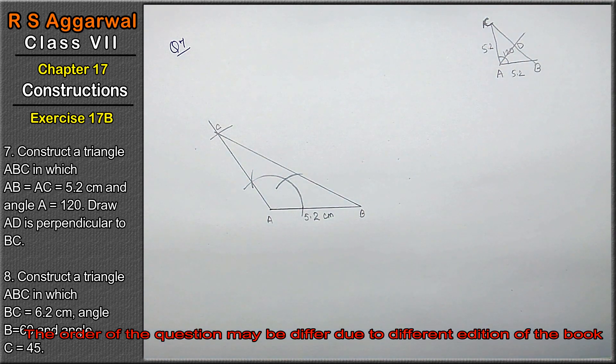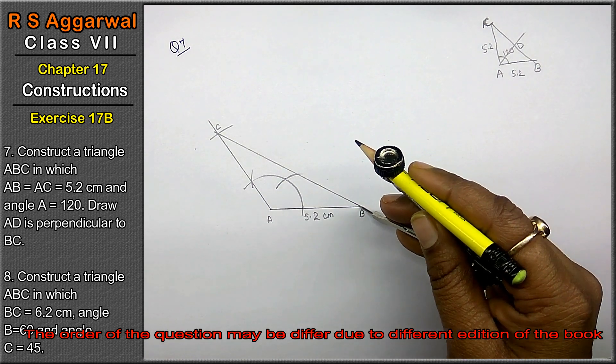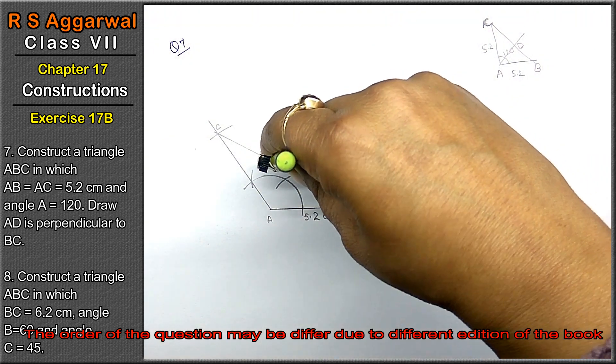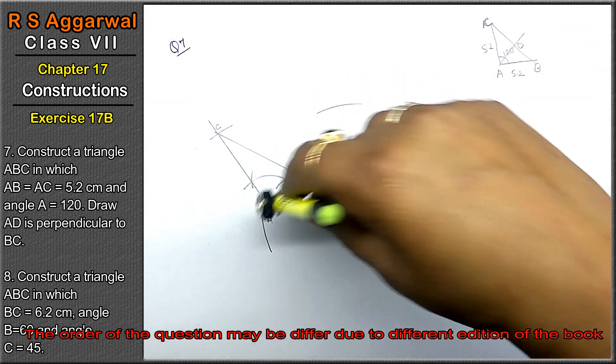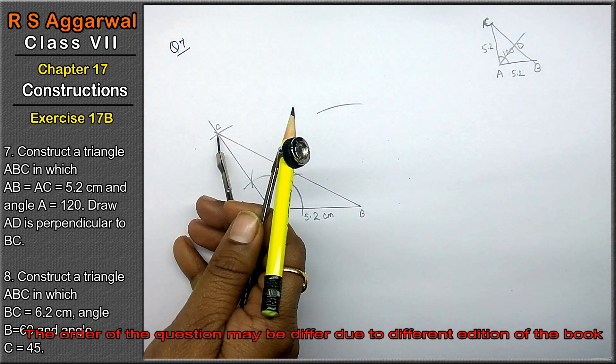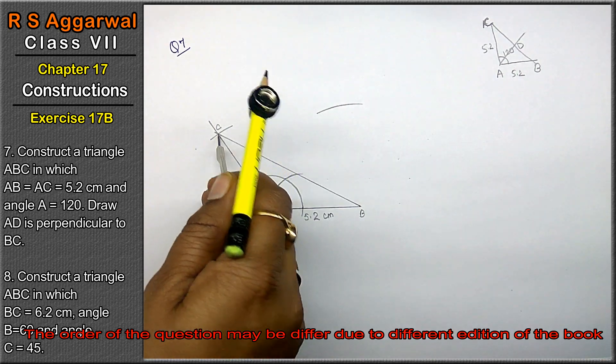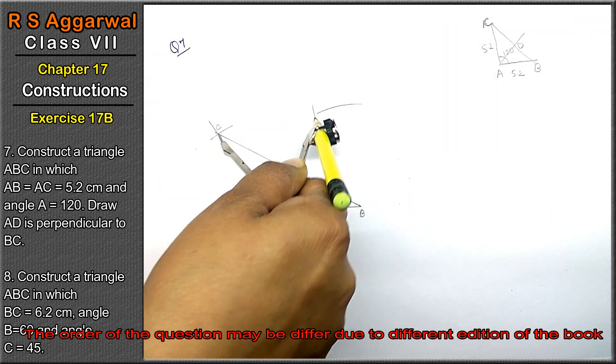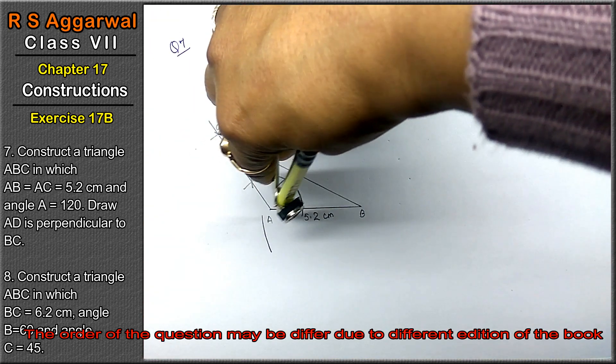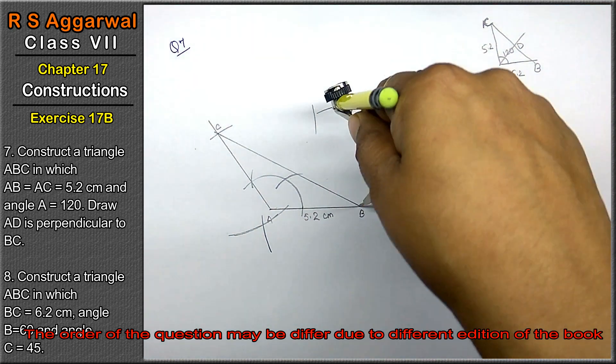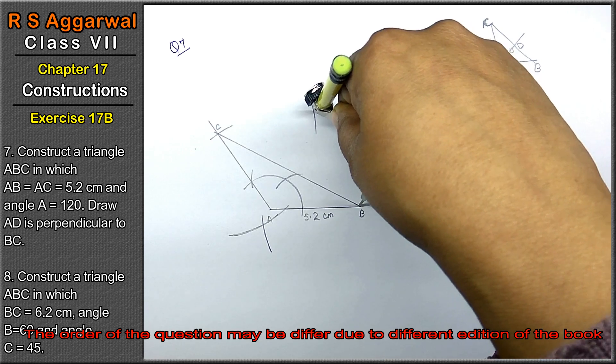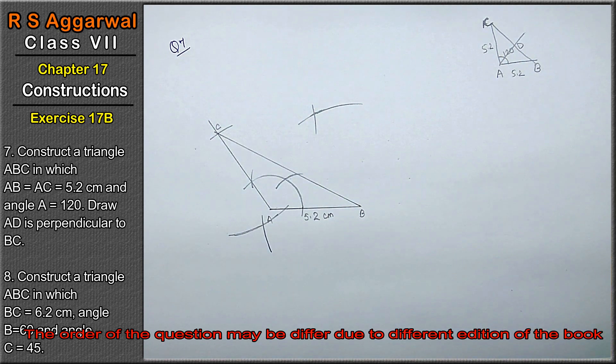Now we will make perpendicular. Now BC is made. From the left, 1 cut here, 1 cut here, same dimension. 1 cut here, 1 cut here.